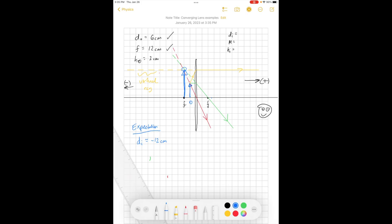It also looks like the magnification, it's certainly going to be positive because this image looks upright, not inverted. So our expectation is that the magnification is positive. It also looks like it's going to be bigger than one. In fact, it's probably going to be about two centimeters, at least if our picture here is okay.